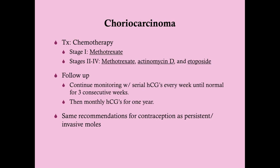Then you follow up with monthly HCGs for one year. The same contraception recommendations apply: use barrier contraception until you have three consecutive weeks of HCG normalization, then you can use hormonal contraception until you are done monitoring. You want to avoid pregnancy for one year after chemotherapy is ended.